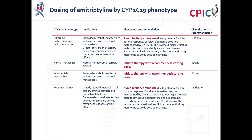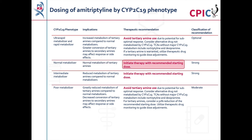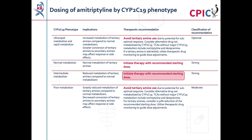These are the CPIC dosing recommendations for amitriptyline by CYP2C19 phenotype. Patients with a CYP2C19 ultra-rapid or rapid metabolizer phenotype will have increased metabolism of tertiary amines such as amitriptyline; use of tertiary amines should be avoided. If use of a tertiary amine is warranted, therapeutic drug monitoring should be used to guide dose adjustments — this is an optional recommendation. Patients with a CYP2C19 normal or intermediate metabolizer phenotype will have normal or reduced metabolism of tertiary amines and can begin amitriptyline therapy with the recommended starting dose. This is a strong recommendation.